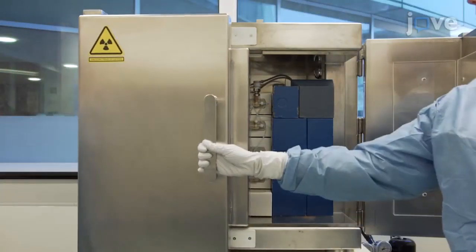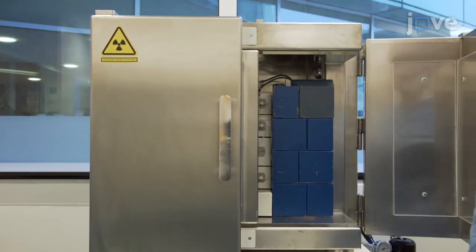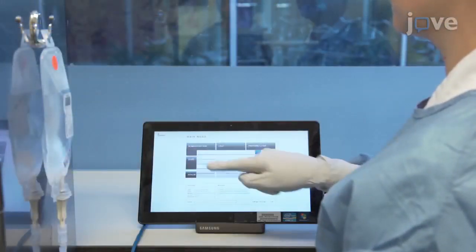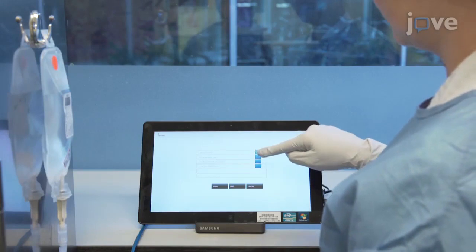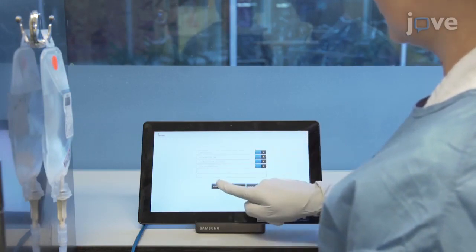Close the lead shielding around the labeling module and start the production of the gallium-68 dotatate via the tablet computer attached to the labeling module.